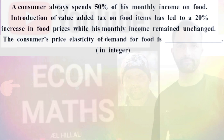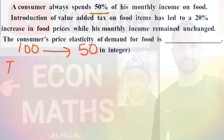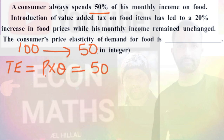Let us take any arbitrary income of the consumer — let us say the income is $100. 50% of $100 means he is spending 50% of income on food items, so that comes out to be $50. Total expenditure is equal to price multiplied by quantity, so this total expenditure should equal 50, since he is spending 50% of his monthly income. That means P × Q = 50.